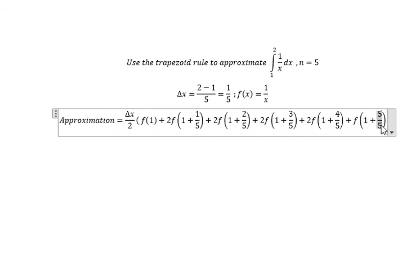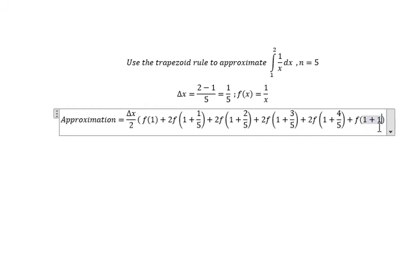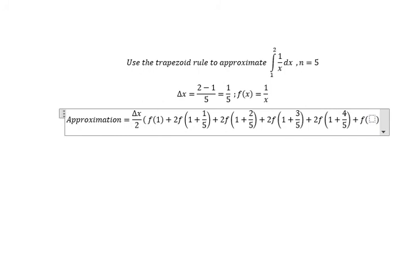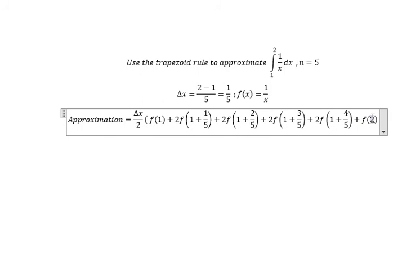5 over 5 is number 1, and 1 plus 1 is number 2 — this is the top. At the top, we don't need to use the coefficient 2 anymore. So we just have f of 2 here.